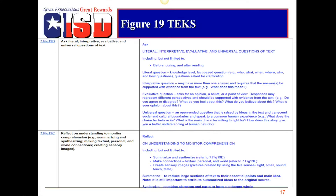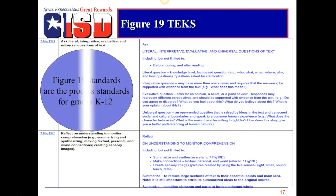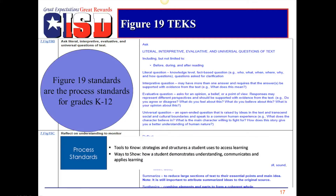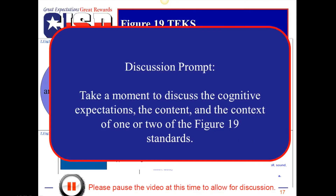Let's take a brief look at Figure 19 in your IFD. The text and student expectations for Figure 19 are also presented with unit level of specificity. Figure 19 standards are the process standards for grades K-12. These process standards are the strategies and structures students use to access learning. They also allow students to demonstrate their understanding, communicate, and apply learning. Take a moment to discuss with your team the cognitive expectations, the content, and the context of one or two of the Figure 19 standards.